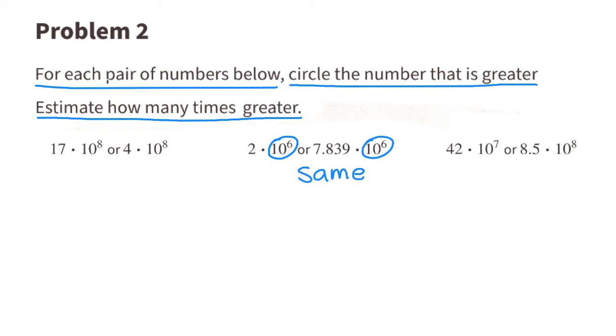The next pair of numbers are also being multiplied by the same power of 10. Since 7.839 is almost 8, it's safe to say that 7.839 is almost 4 times greater than 2.